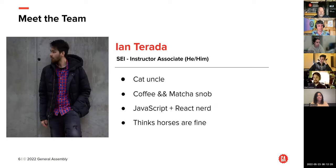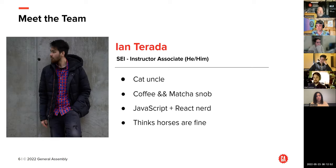Hi everyone. My name's Ian, he/him pronouns. I'm based in Seattle, Washington. I'm another one of the IAs. I'm a huge React nerd — I love JavaScript and React. I love debugging stuff, so I'm sure we'll see lots of each other. I'm a big fan of coffee and matcha — if you have suggestions, please let me know. I think horses are fine; I don't have any strong feelings either way, but I'm glad this horse joke is continuing into another cohort. I'll pass it off to Joe.